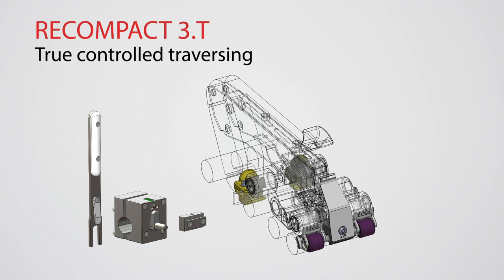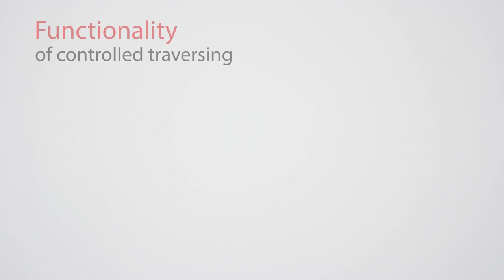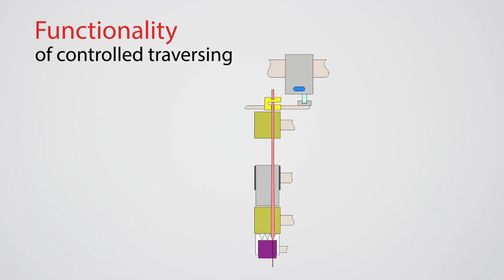It features true controlled traversing. T stands for traversing, either manual or automatic. Our controlled traversing lets you switch easily from one roving path to the other, saving manpower.